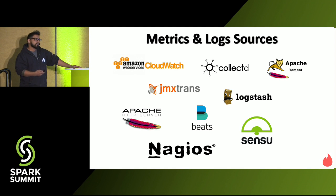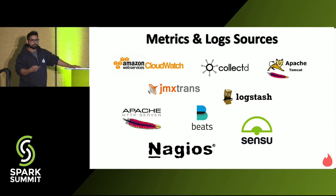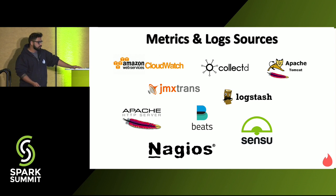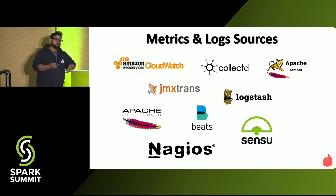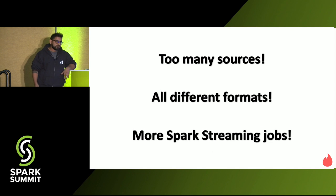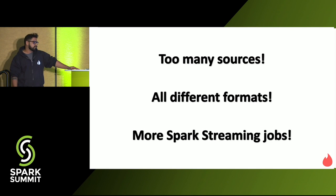All the metrics and log sources he dealt with included many tools — mostly open source except obviously AWS, which charges. Some custom log sources and metric sources were also there. He tried to do as much as possible with open source and not spend too much money. But there was a new problem: too many sources, all in different formats, requiring more Spark streaming jobs for different kinds of formats.